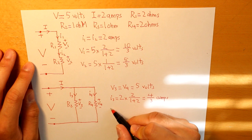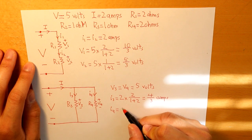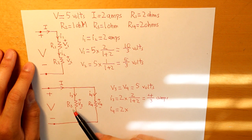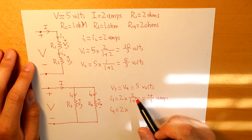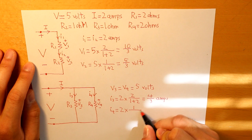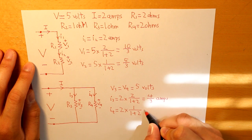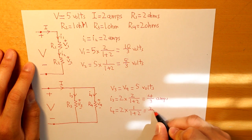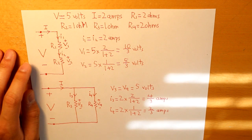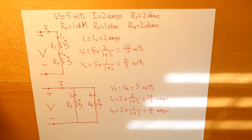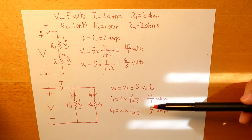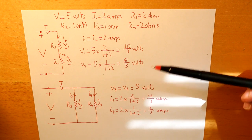Same thing for I4. We take the total current multiplied by the opposite resistor R3 (which is 1 ohm), divided by R3 + R4 (1 + 2 = 3), giving us I4 = 2/3 amps. We are now able to find all elements for each resistor.